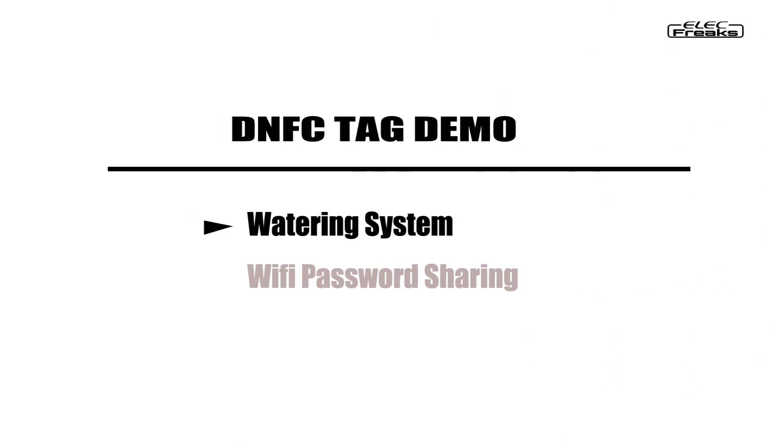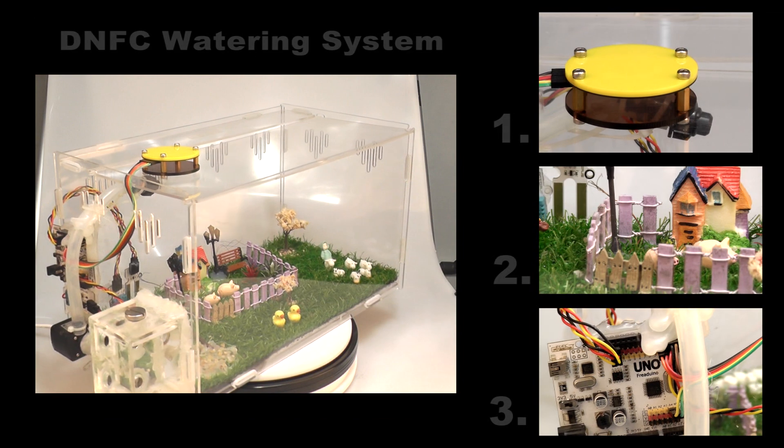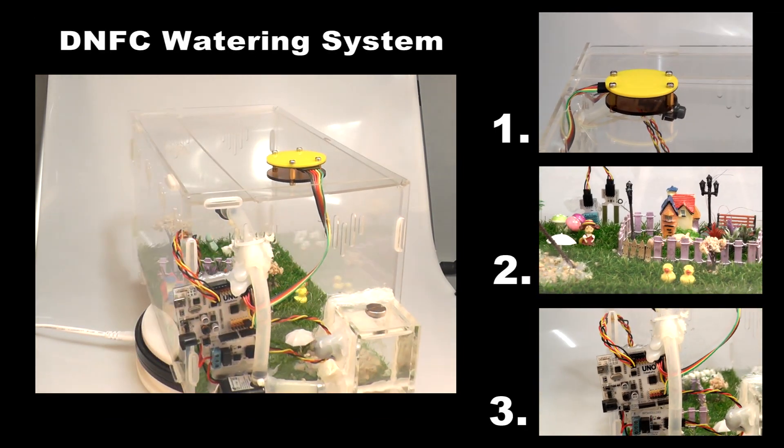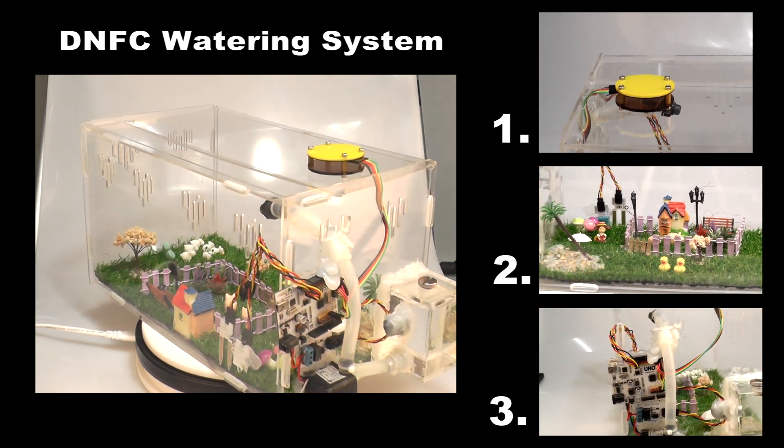First comes our DIY watering system. It's pretty simple. You need a garden, sprinkler hat, the NFC Tag, NFC cable form, microcontroller, a motor, some sensors, and wires.